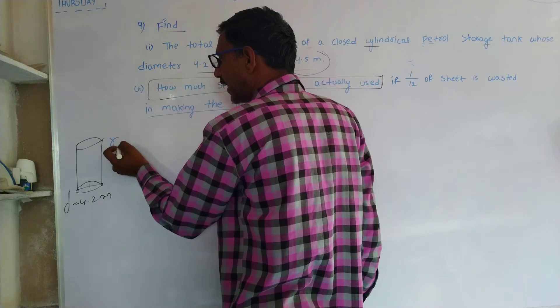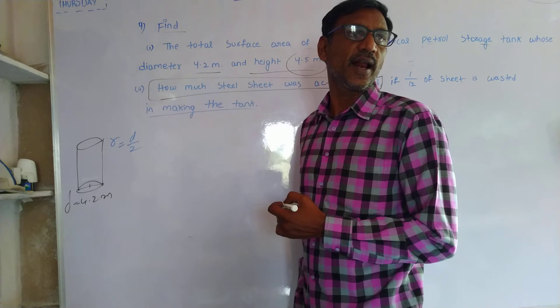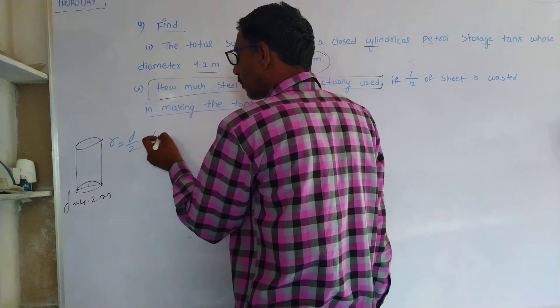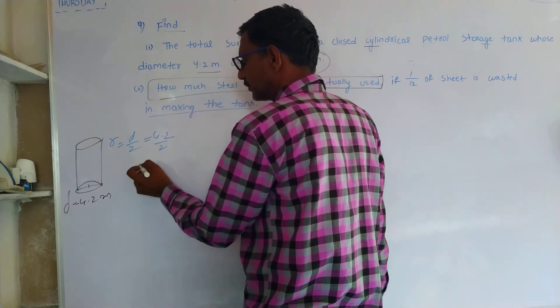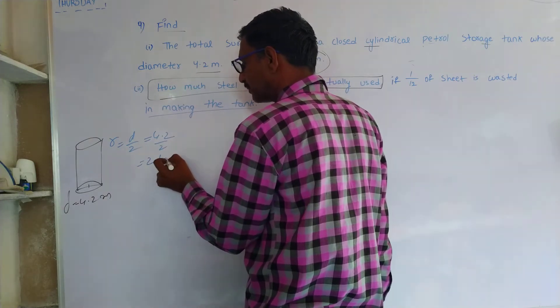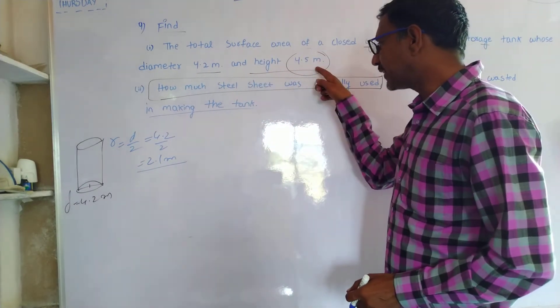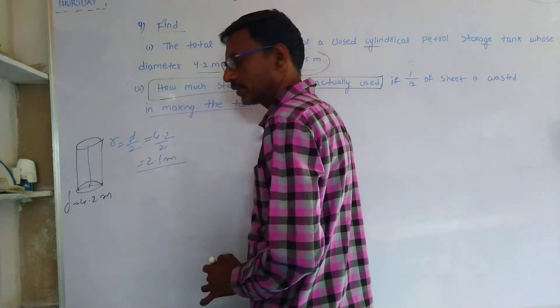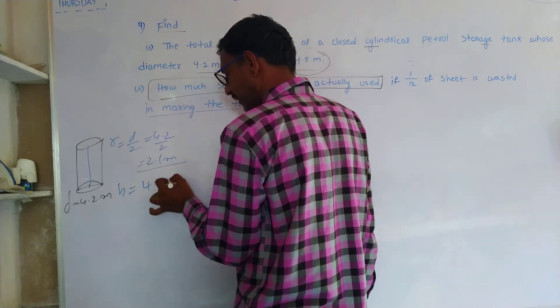Now, radius is equal to diameter by 2. Am I clear? That is equal to 4.2 by 2, that is equal to 2.1 meters. And its height H is given by 4.5 meters.